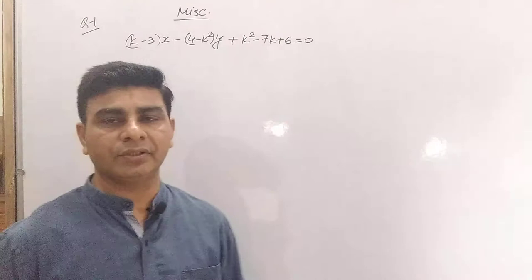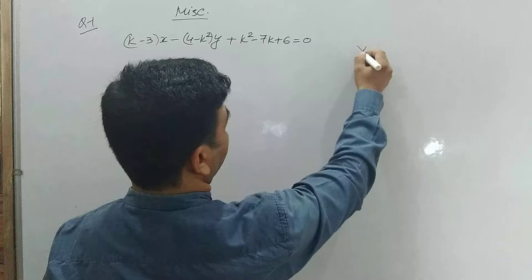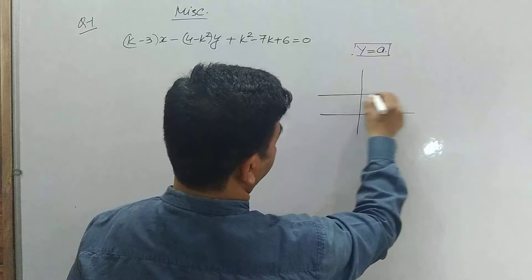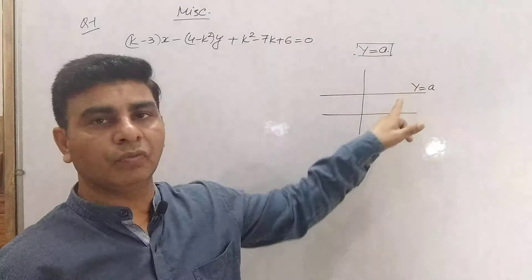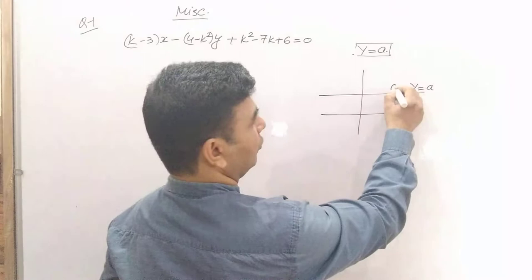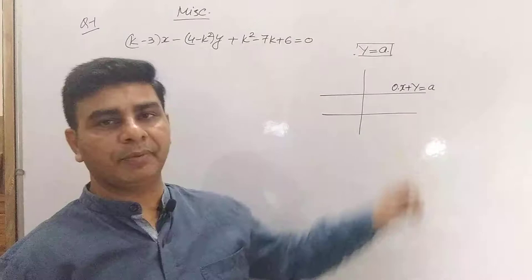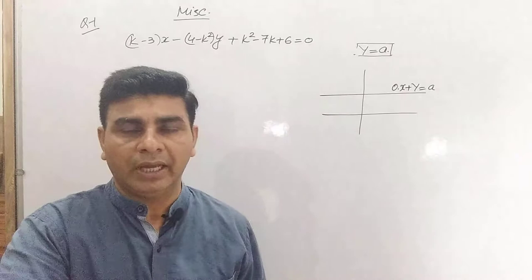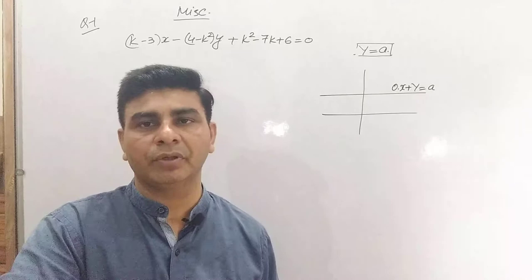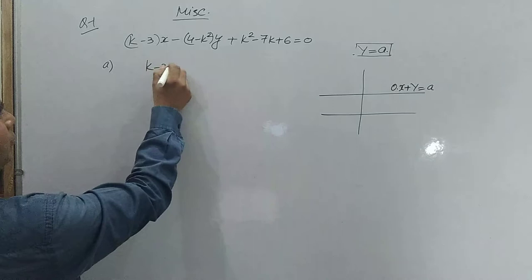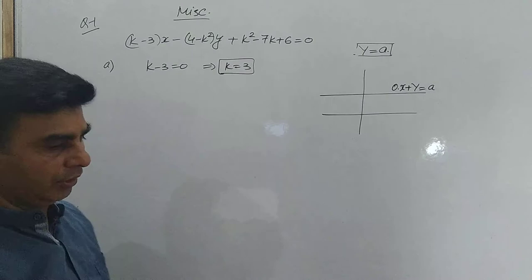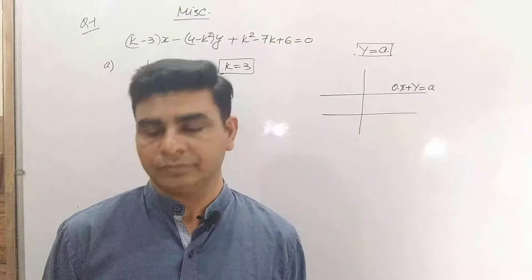Any line parallel to the x-axis is given by y = a, where a is any arbitrary constant. This can be written as 0·x + y = a, meaning the coefficient of x is zero. So whenever a line is parallel to the x-axis, the coefficient of x must equal zero. Therefore k - 3 = 0, giving k = 3. The value of k should be 3 for this line to be parallel to the x-axis.